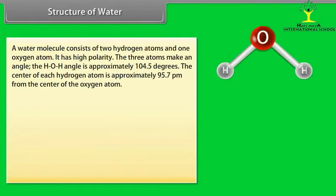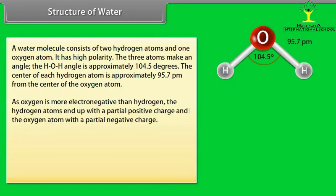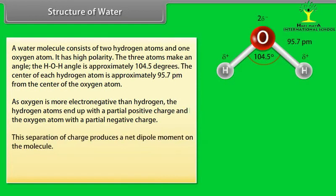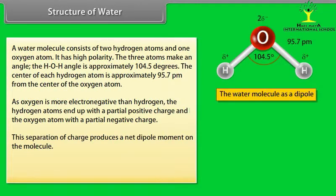Structure of water. A water molecule consists of two hydrogen atoms and one oxygen atom. It has high polarity. The three atoms make an angle. The H-O-H angle is approximately 104.5 degrees. The centre of each hydrogen atom is approximately 95.7 picometre from the centre of the oxygen atom. As oxygen is more electronegative than hydrogen, the hydrogen atoms end up with a partial positive charge and the oxygen atom with a partial negative charge. This separation of charge produces a net dipole moment on the molecule.